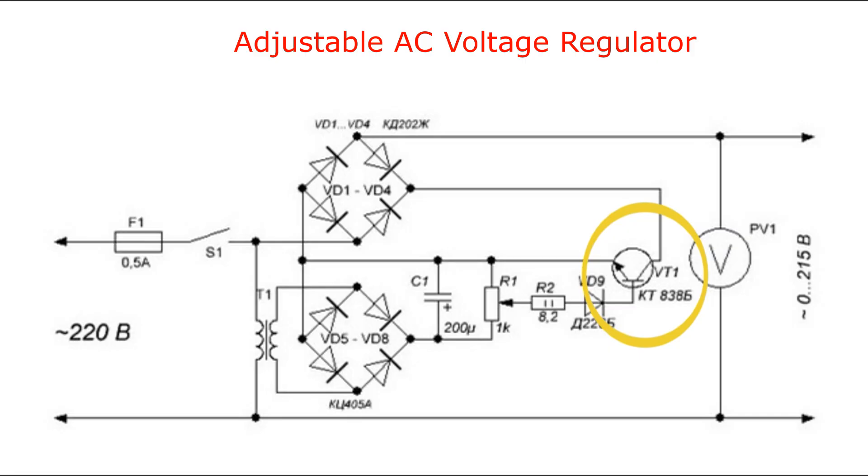For example, a KT 856, KT 834, or KT 847. The voltmeter should have a scale from 1 volt to 220 V. This is a very simple adjustable AC voltage regulator circuit.